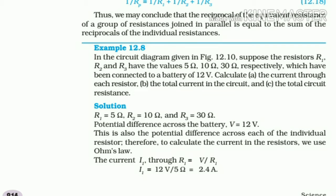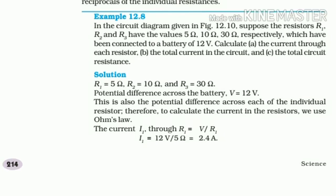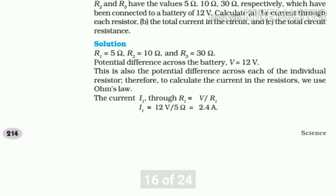Total current in the circuit and total circuit resistance. So we have R1, R2, R3. Potential difference is equal to 12 volt.